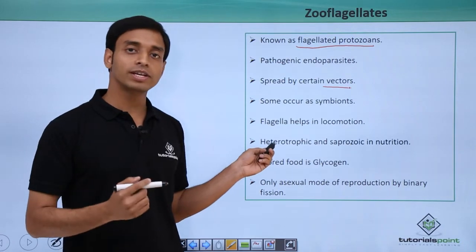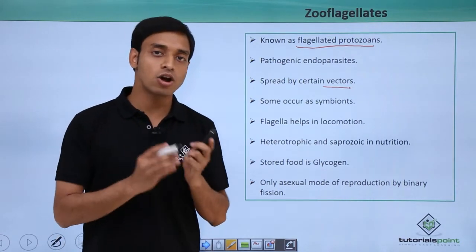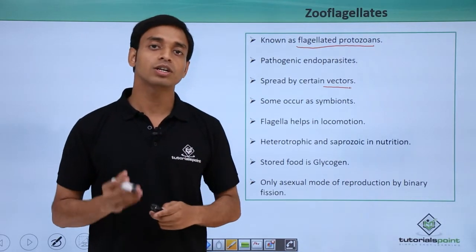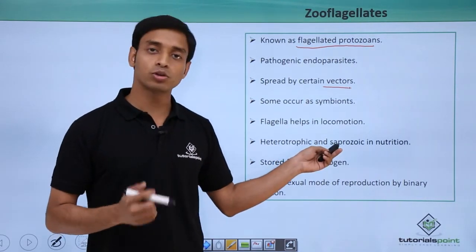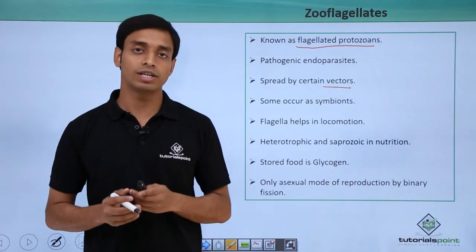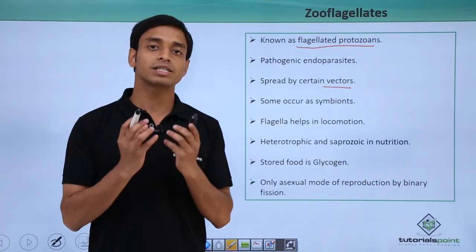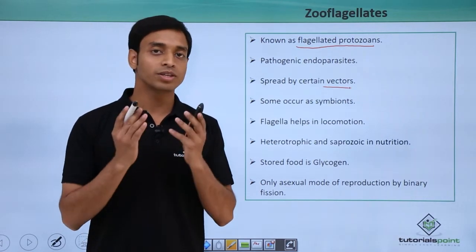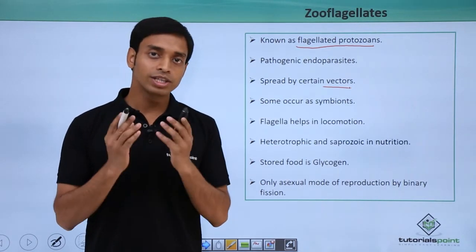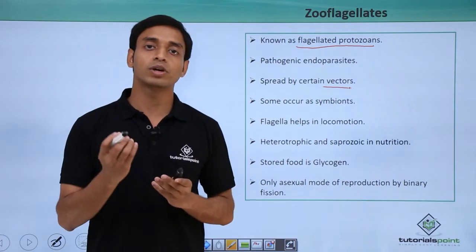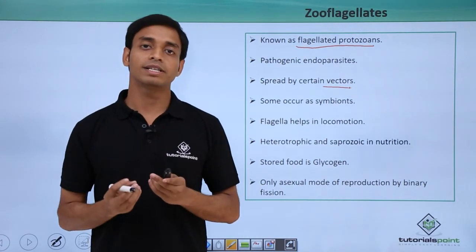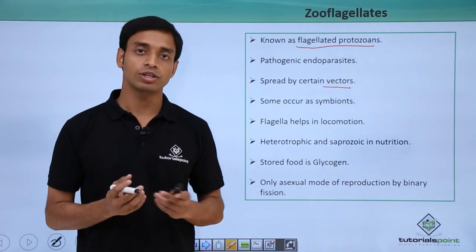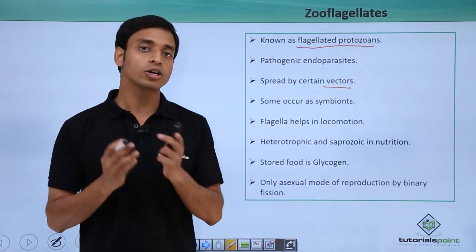They are heterotrophic in nutrition, which means they cannot make their own food because of the absence of photosynthetic pigments which are chlorophyll, and they are saprozoic also. They can be saprozoic in nutrition, which means they can secrete their enzymes out of their body to the external surroundings where the food is available. These complex food materials are broken into simpler materials. These simple materials are then absorbed by these type of cells for their nutrition. So they can be heterotrophic or saprozoic.